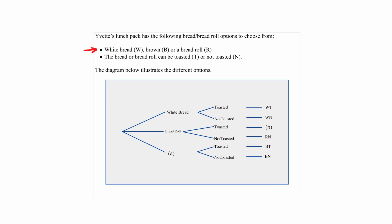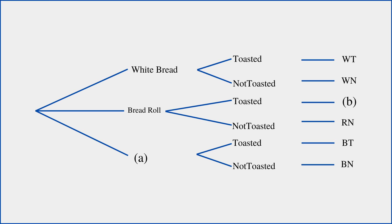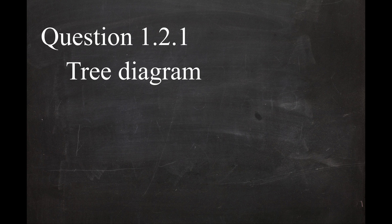You are given a tree diagram with three options: white bread, brown bread, or bread roll. The bread or roll can be toasted or not toasted. In question 1.2.1, you are asked to name the type of diagram illustrated here. This type of diagram is known as a tree diagram.